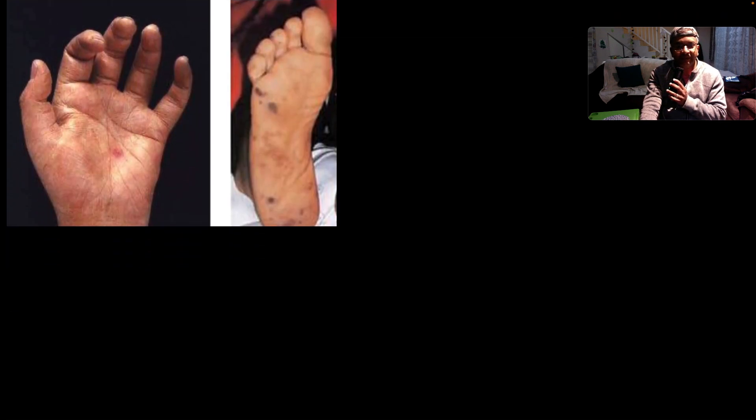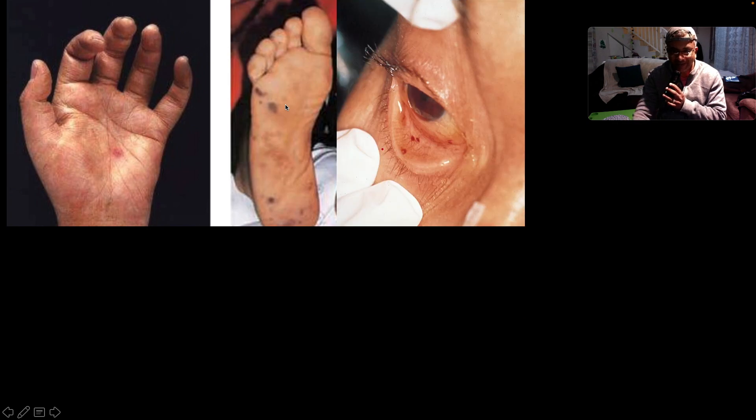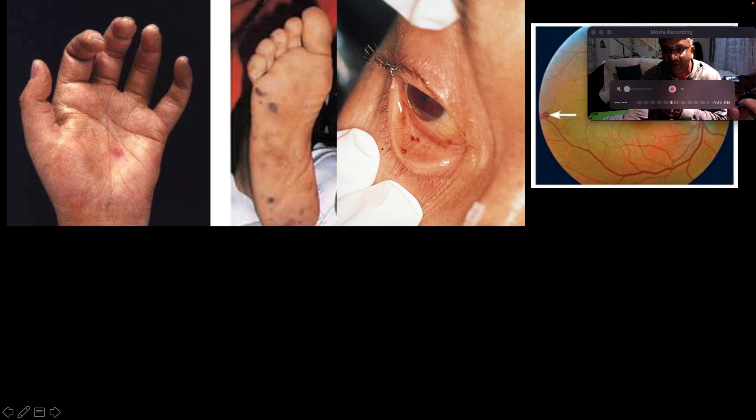Here are a couple of examples. Beautiful examples here. This is Janeway's lesions. So remember that Osler's nodes are palpable and painful, but Janeway's lesions are macular and non-tender. This is an example of the Janeway lesion over the palm and the soles. Here are conjunctival hemorrhages.